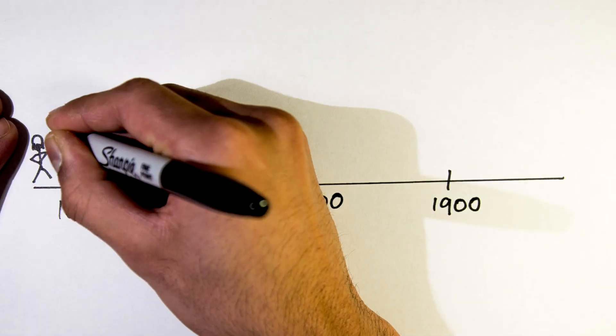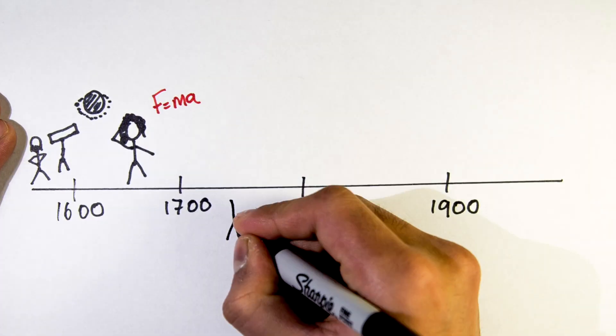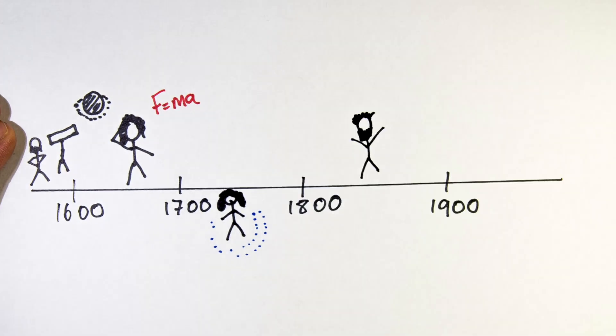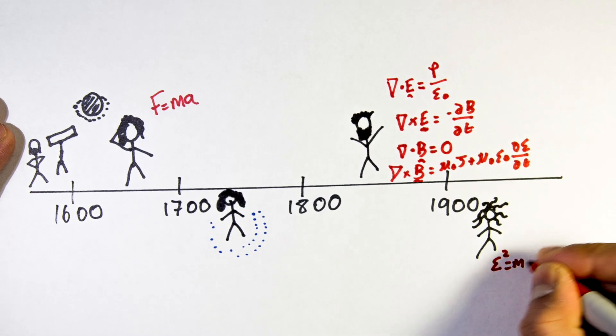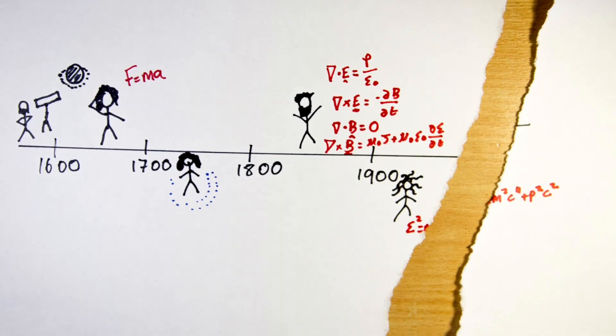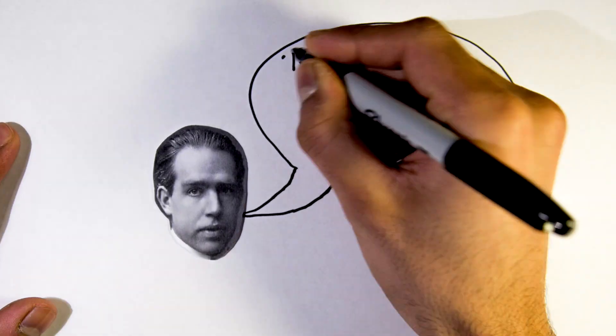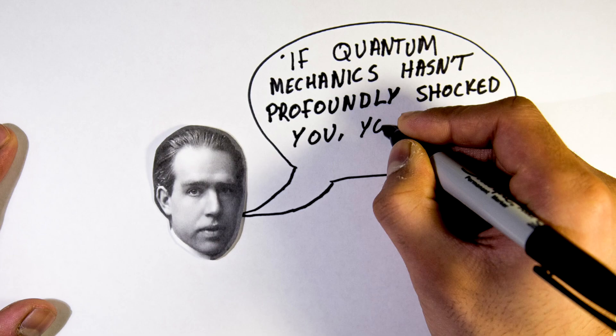Not many ideas have shaken existing paradigms in the same way as quantum mechanics. The theory's development in the early 20th century changed the way physicists thought about the universe of particles so radically, it led Danish physicist Niels Bohr to state: if quantum mechanics hasn't profoundly shocked you, you haven't understood it yet.